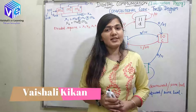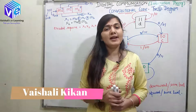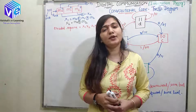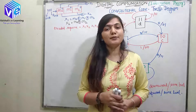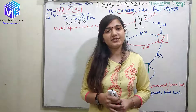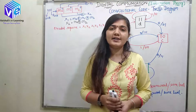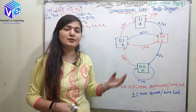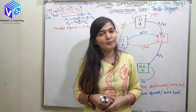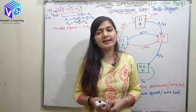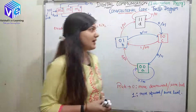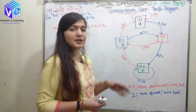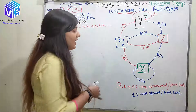Hello and welcome to this video lecture series on digital communication. We are discussing the information theory part, and in that we are discussing the convolutional code encoding. We have come to the next part of encoding, that is the trellis diagram. The trellis diagram can be made using the state diagram.